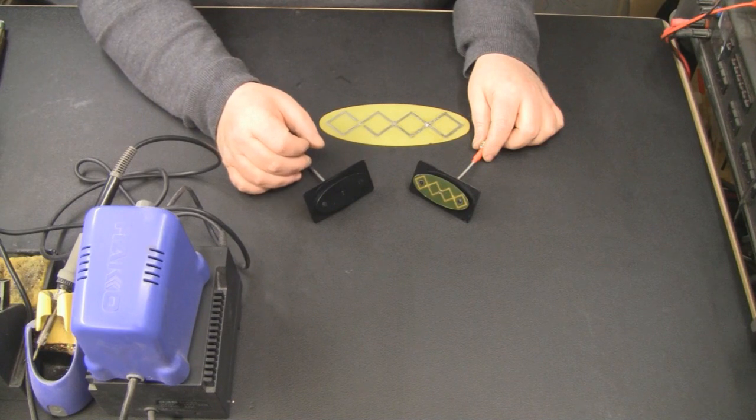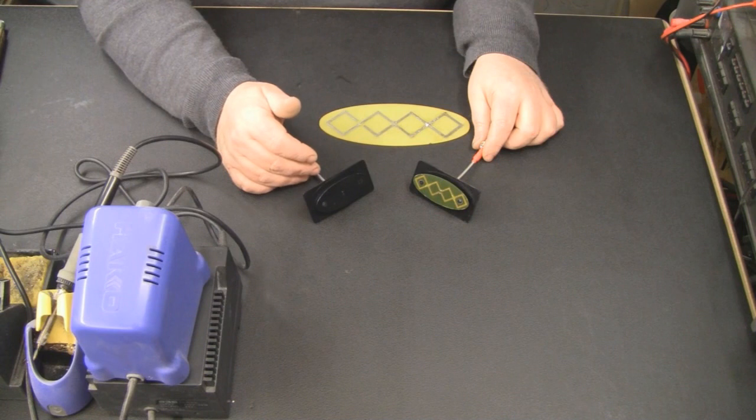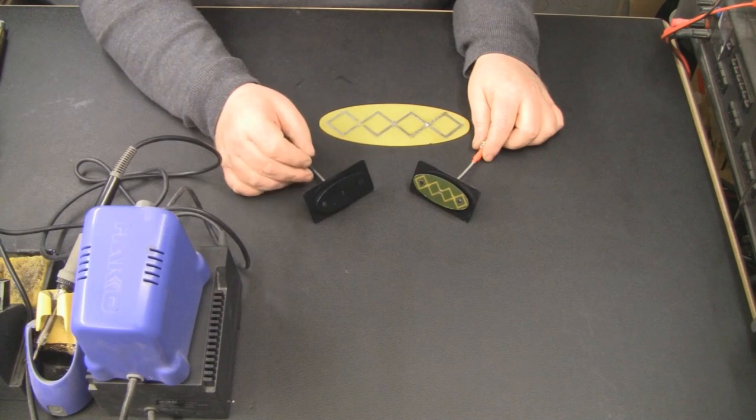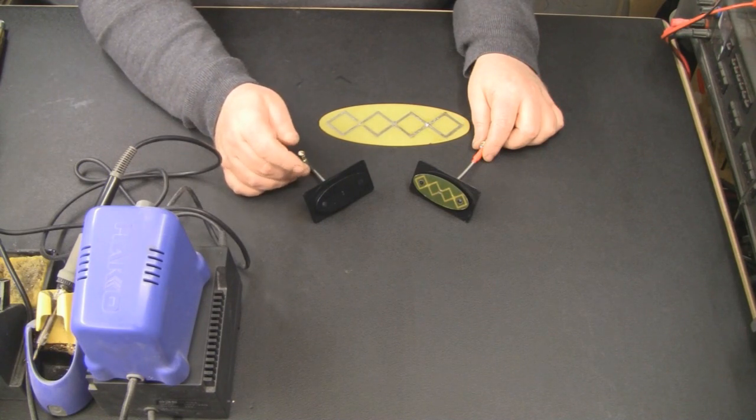So I decided to produce a double bi-quad using PCB materials like I did in the Yagi bi-quad video.